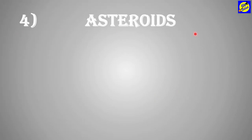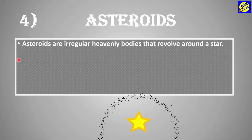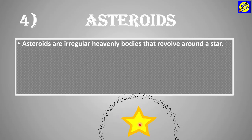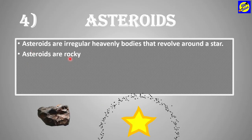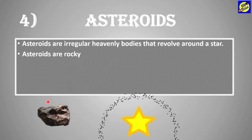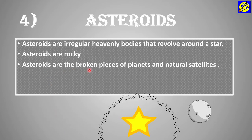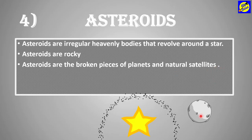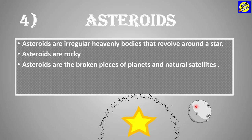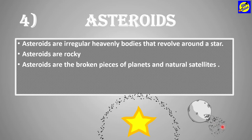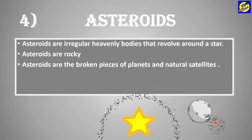Asteroids are irregular heavenly bodies that revolve around a star. As you can see, these are asteroids and they revolve around a star. Asteroids are rocky — this is a close-up of an asteroid and it is rocky. Asteroids are the broken pieces of planets and natural satellites. When a planet or natural satellite breaks due to various reasons, the broken pieces form the asteroids.